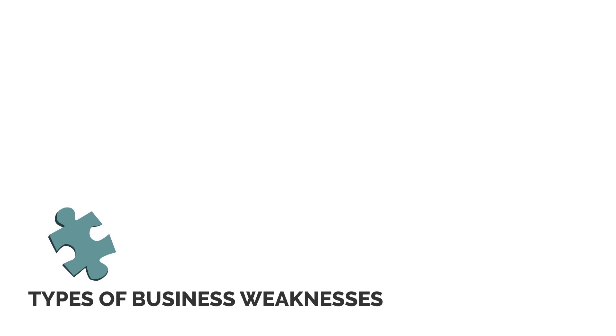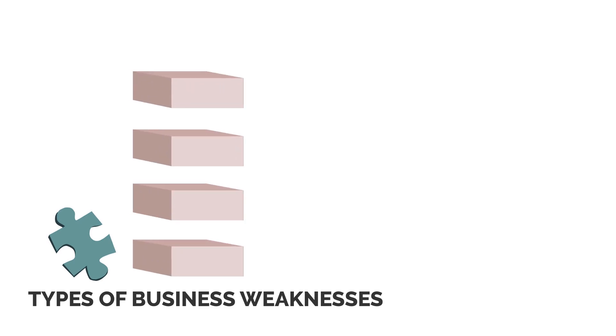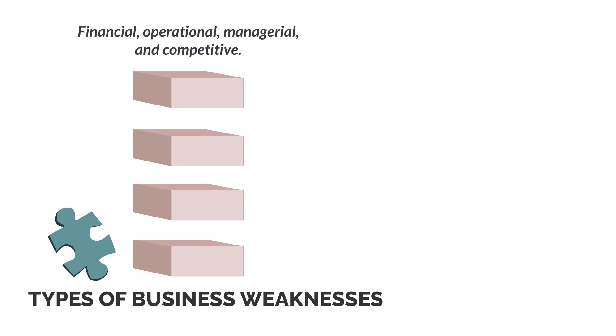There are many different types of business weaknesses, but they can broadly be classified into four main categories: financial, operational, managerial, and competitive. Let's take a closer look at each of these.